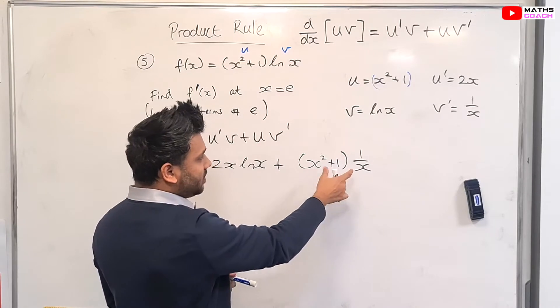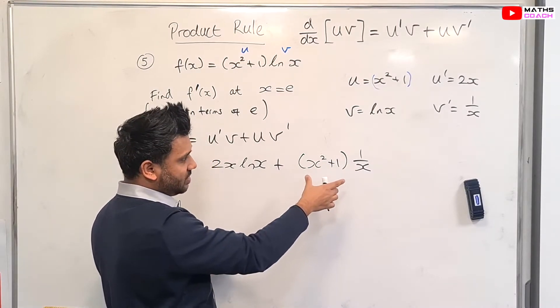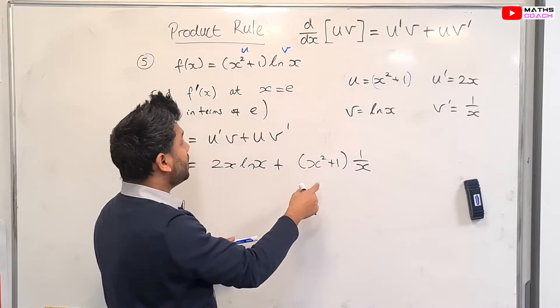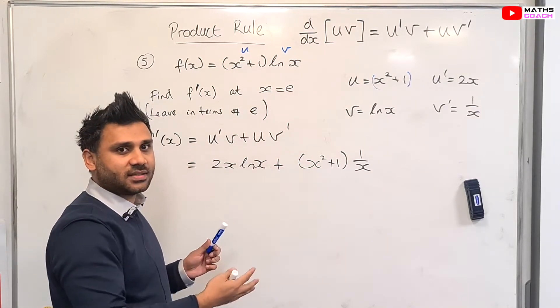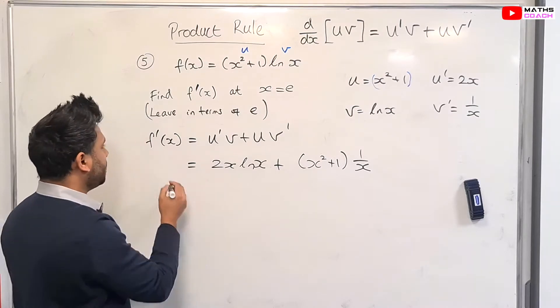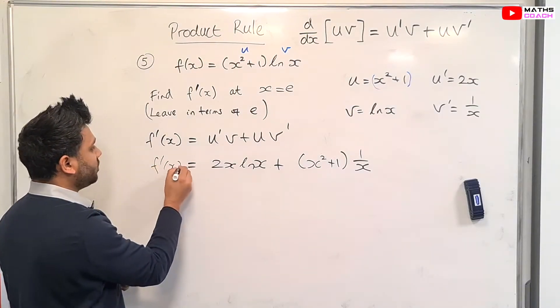Okay, now you may be tempted to expand the bracket here, but I would suggest just leave it as it is for now. When we do the substitution of x equals e, then we may look at how we can tidy this expression up. So this is basically our f'(x).